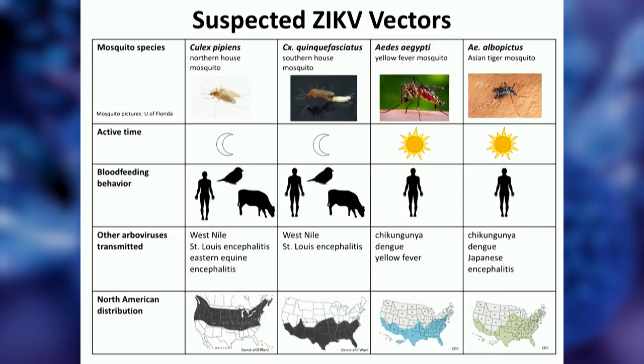On the left are stats for the two Culex species most abundant in North America, and on the right are the two established Zika vectors elsewhere — which also vector dengue and chikungunya. Aedes are more active in the daytime and preferentially feed on people, whereas the two Culex species tend to feed more at dawn and dusk and have a more general host preference.